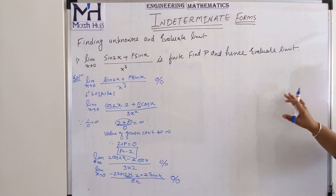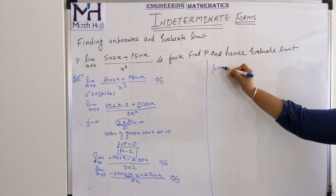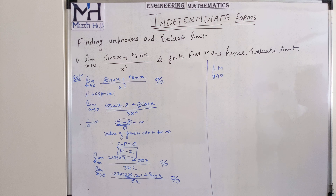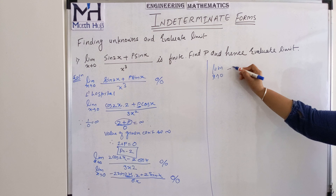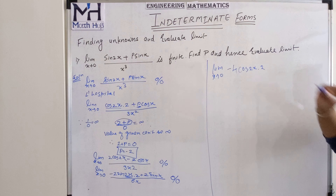Applying L'Hospital rule again: differentiate numerator and denominator. Minus 4 stays, and derivative of sin 2x is cos 2x times 2, giving minus 8 cos 2x. For the second term: plus 2·cos x. Denominator: differentiation of 6x is 6. Putting the limit: cos(0) = 1, so numerator gives minus 8 plus 2 = minus 6, and denominator is 6. So this comes to minus 6 by 6, which is minus 1.